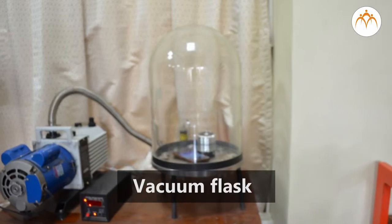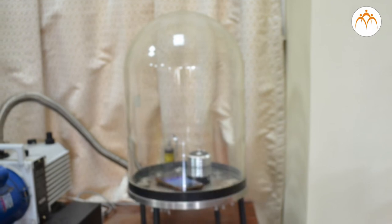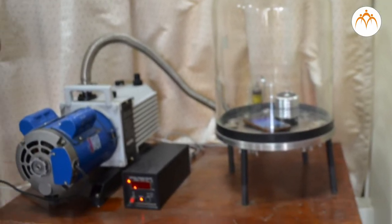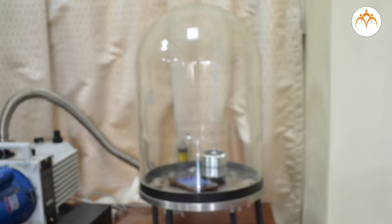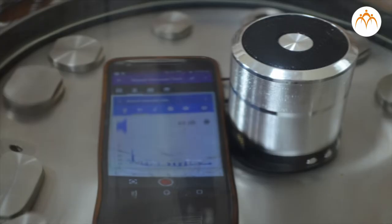This is the vacuum flask used in the laboratory. Vacuum is created with the help of this pump. The pump will remove air from the flask. The indicator shows pressure in millibar inside the flask. This speaker is playing a sample note at fixed intensity.